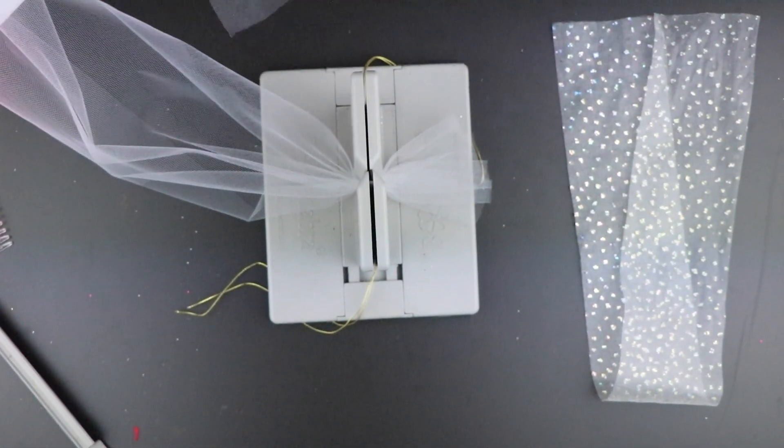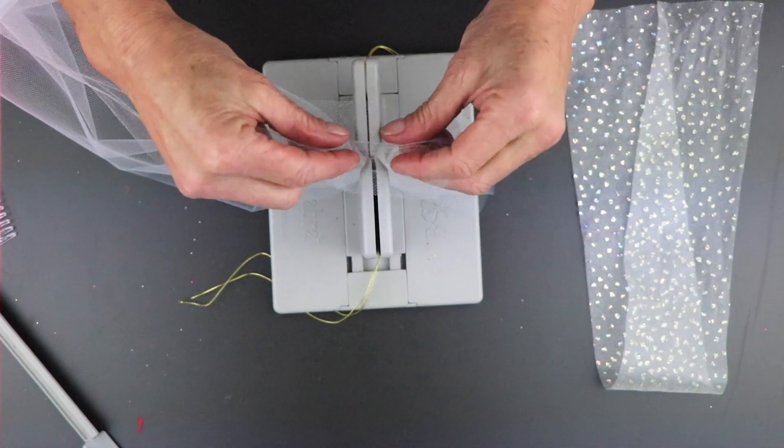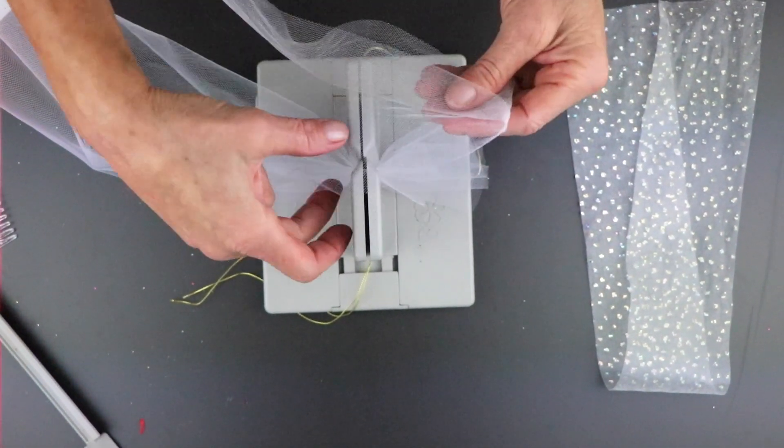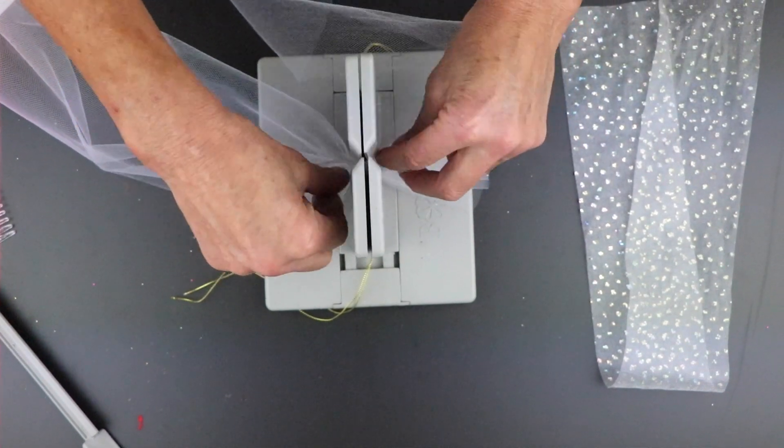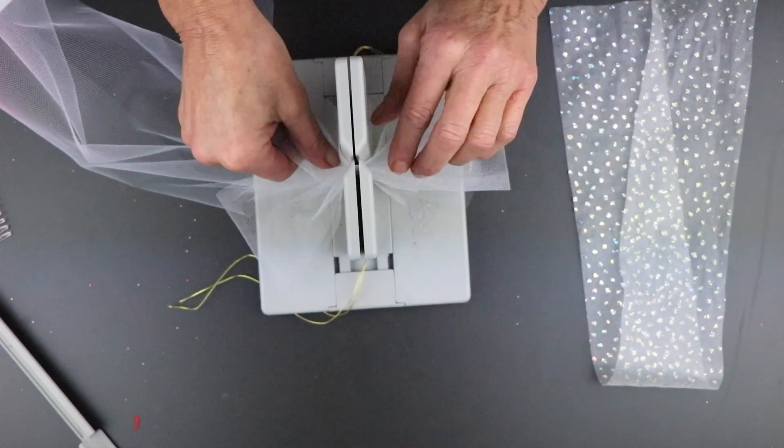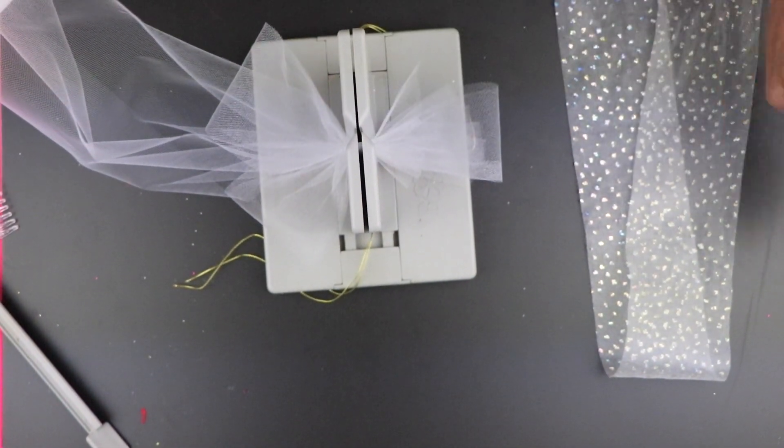Then I'm going to take my thinner tulle, which is probably about two and a half inches wide, and I'm just going to lay that in, and I'm going to fold it, and I'm going to make three loops. And I'm just going to cut it right there.